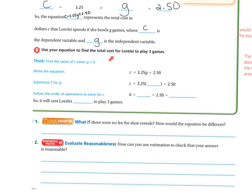So let's use our equation to find the total cost for Lorelai if she plays three games. Wherever my G is, I'm going to put in the three. To find the value of C when G equals three, we rewrite the equation: C equals 3.25G plus 2.50. Right here where the G is, I put the three. So now I have three times 3.25, which is 9.75.